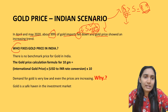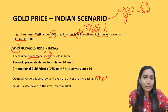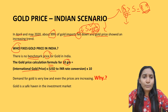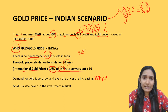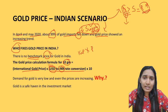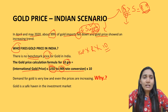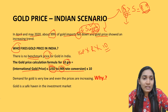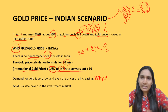There is no benchmark price for gold in India. The formula used for calculation of gold prices per 10 grams is: International Gold Price × (US Dollar to INR conversion rate) × 10. Here '10' indicates 10 grams of gold. This is the calculation formula for gold prices in India. Even with low domestic demand, prices are increasing — let's look at demand in detail.